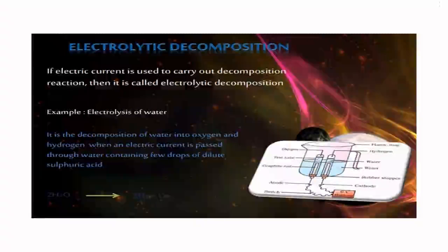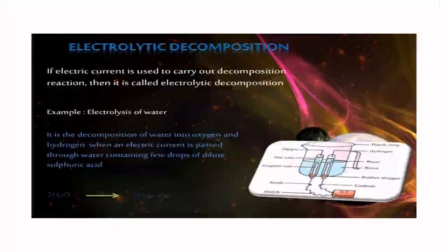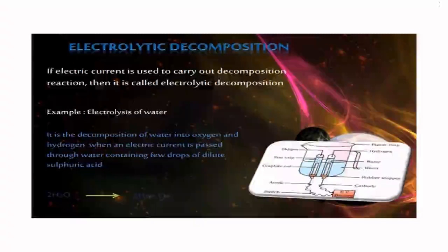Third type of decomposition is electrolytic decomposition. If electric current is used to carry out decomposition reaction, then it is called electrolytic decomposition. Example: electrolysis of water. 2H2O gives 2H2 + O2. It is decomposition of water into oxygen and hydrogen when an electric current is passed through water containing a few drops of dilute sulfuric acid.